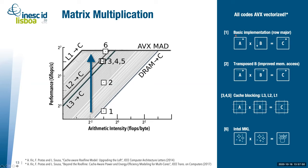We start with the basic implementation that has all three matrices in row-major order. Due to really bad accesses to the B matrix, our first performance point will be DRAM bound, as suggested by the cache-aware roofline model. We then draw this vertical line and can see there is potential to reach the compute roof, but we first need to overcome all those memory problems.